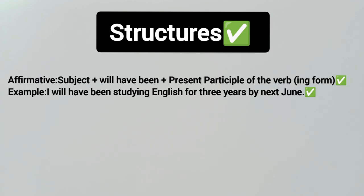Now let's talk about some structures. The affirmative structure is: subject + will have been + present participle (the -ing form of the verb). For example: 'I will have been studying English for three years by next June.'